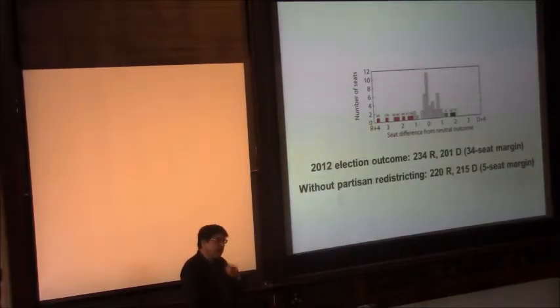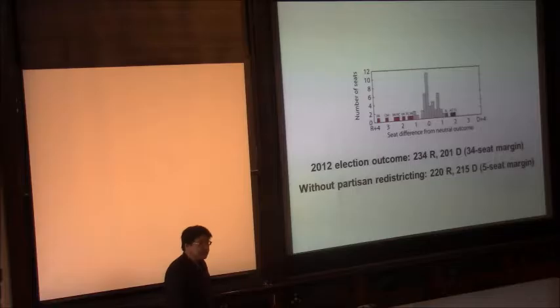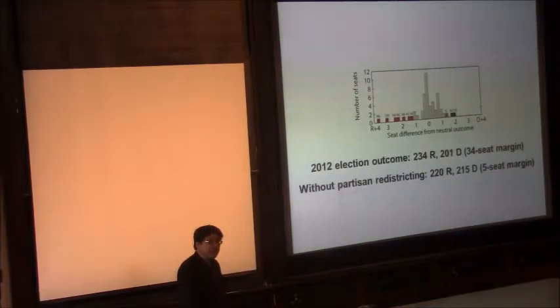So long story short, redistricting right now appears to be worth about a 10 to 15 seat advantage for the Republican Party. And that means a margin, since it's double that, a margin of more like 20 to 30 seats. And so what that means is that a pretty significant component of the Republican majority in Congress is currently, thanks to partisan gerrymandering.